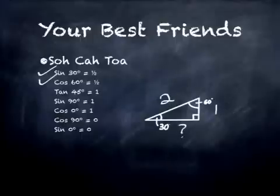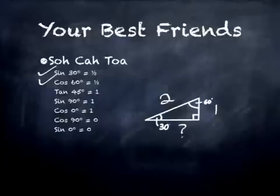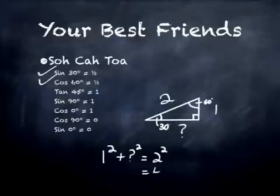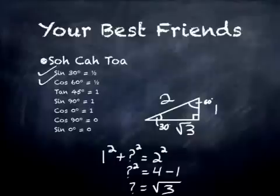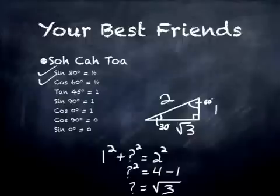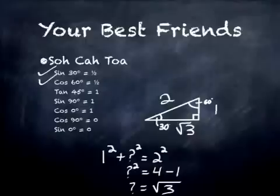If we know that the side opposite 30 degrees (or adjacent to 60 degrees) is half the length of the hypotenuse, what is the third side? Using Pythagoras' Theorem: 1 squared plus that length squared equals hypotenuse squared. Solving: 2 squared (which is 4) minus 1 squared (which is 1) equals 3, so the third side is root 3. Therefore, cosine of 30 degrees equals root 3 over 2 (adjacent over hypotenuse), and sine of 60 degrees equals root 3 over 2, where root 3 is the length opposite the 60-degree angle.